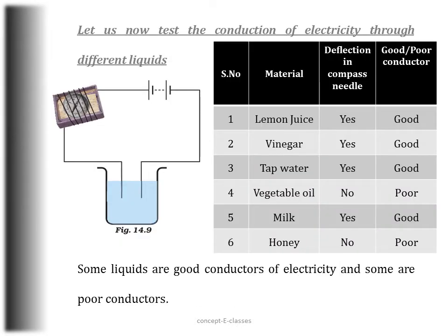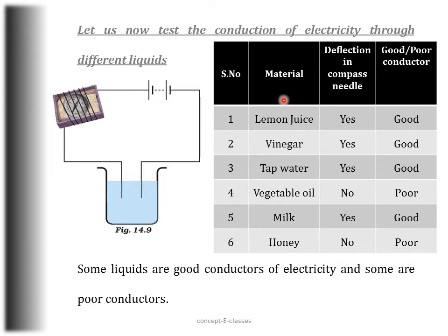To test liquid conductivity using the magnetic effect, take a tray of a matchbox and wrap an electric wire over the tray, then place a small compass needle inside it. Connect one free end of the wire to one terminal of the battery and another wire to the other terminal, leaving the other ends free. Take these free ends and dip them inside the liquid being tested.